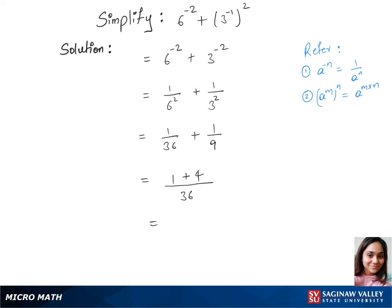So we have now 5 over 36, which is our final answer.